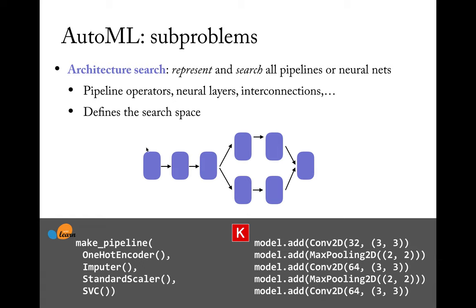Current ways to create these pipelines are typically scikit-learn type pipelines, which are quite linear, although non-linear pipelines are possible too. We can create those pipelines in code — for example, a pipeline with an imputer, scaler, and then a support vector machine. If we use Keras, we can build models by adding layers one by one and can also do branches.